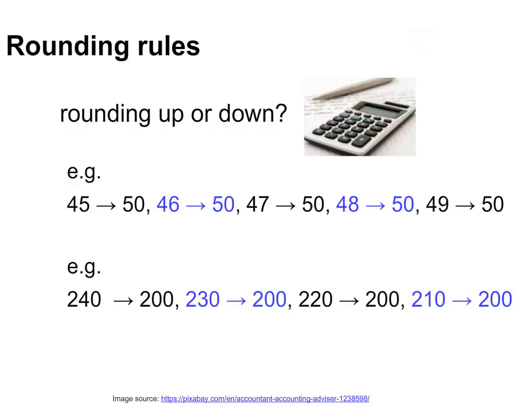Remember rounding rules. When the digit is 5 or more, the number is rounded up. So to the nearest 10, all these numbers in the 40s round up to 50. When the digit is 4 or less, the number is rounded down. So to the nearest 100, all these numbers in the 200s round down to 200.